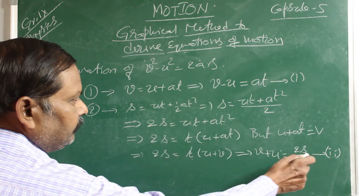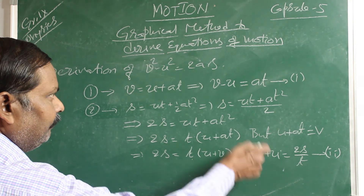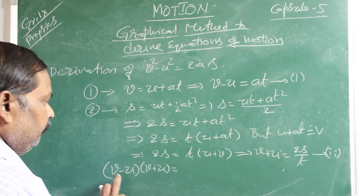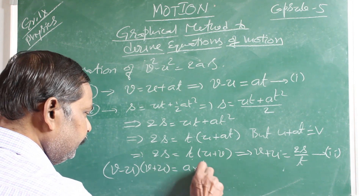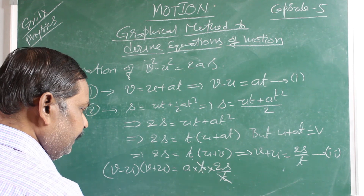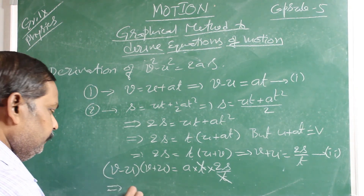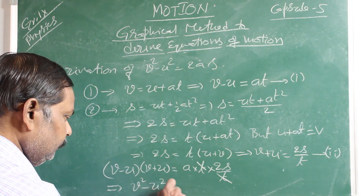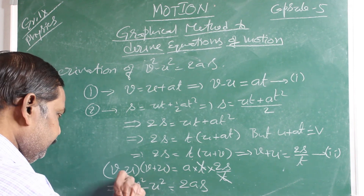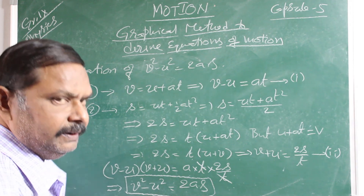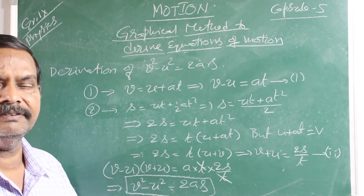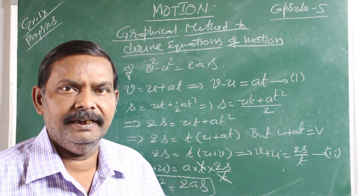From equation 1, V - U = AT. From the second relation, V + U = 2S/T. Multiplying the left-hand sides: (V - U)(V + U) = AT × (2S/T). The T cancels, and (V - U)(V + U) = V² - U², giving V² - U² = 2AS. This is the third equation of motion. To prove it, we used both the first and second equations of motion. That is it for this capsule — signing off, thank you.